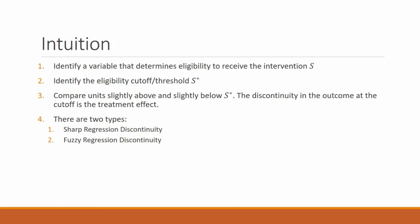In practice, we need to identify a variable that determines eligibility — we'll call that S — and identify the eligibility cutoff or threshold, S-star. Then we compare units slightly above or slightly below S-star, either by hand or in a regression framework. There are two versions of regression discontinuity: sharp regression discontinuity and fuzzy regression discontinuity, which imply slight differences in the econometric method used.